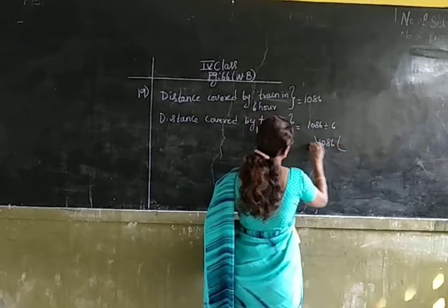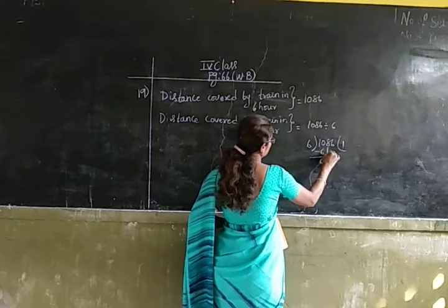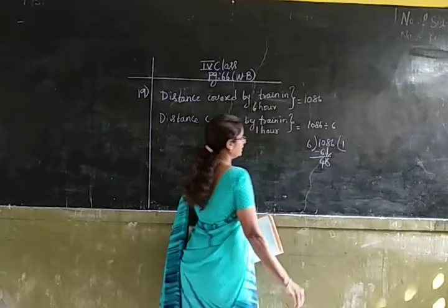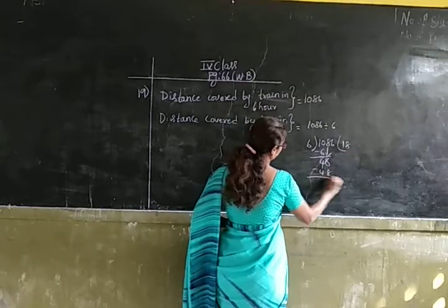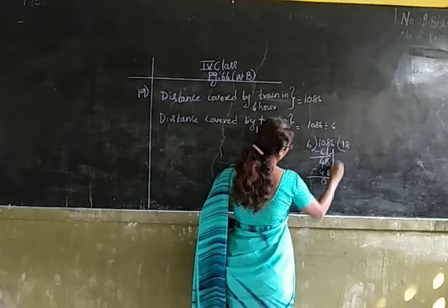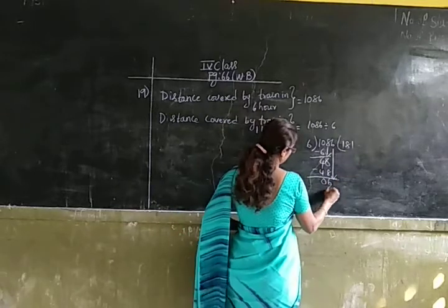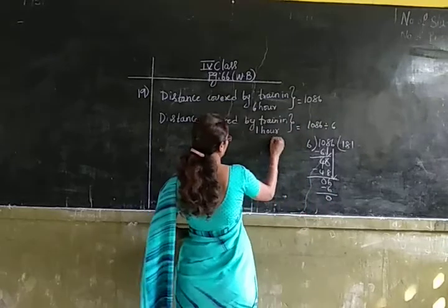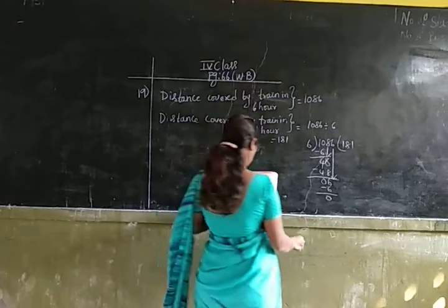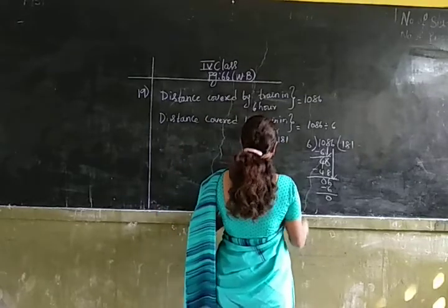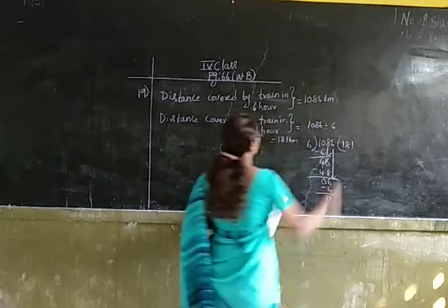1086 divided by 6. 6 ones are 6. 10 minus 6 is 4. Bring down 8. 6 eights are 48. 48 minus 48 is 0. Bring down 6. 6 sixes are 36, minus 36 is 0. So the train covers 181 kilometers in one hour.